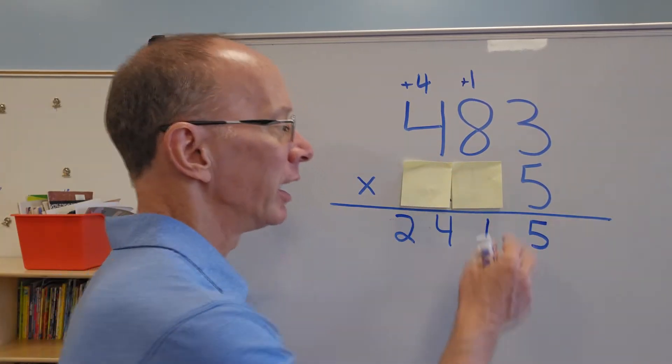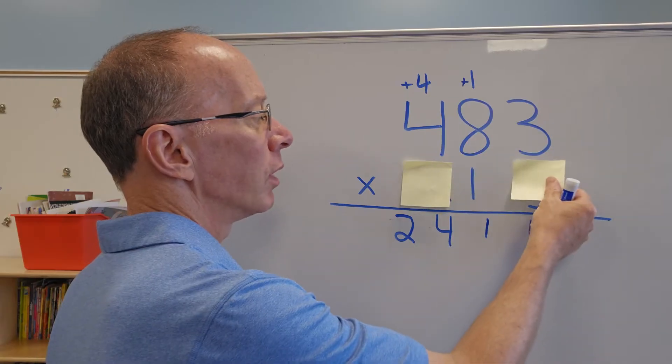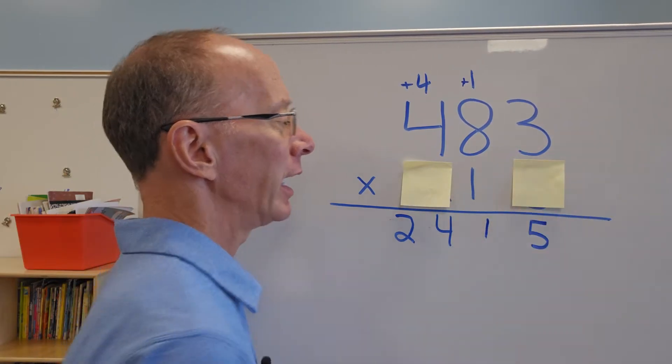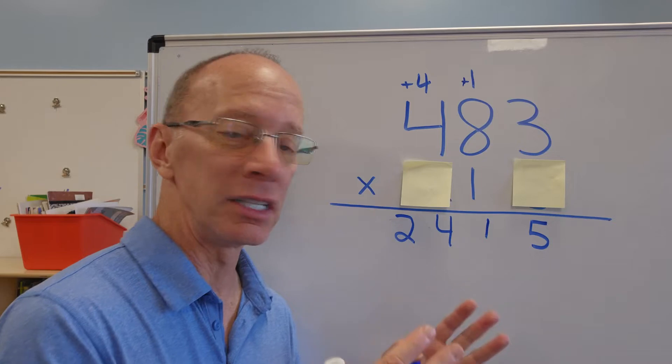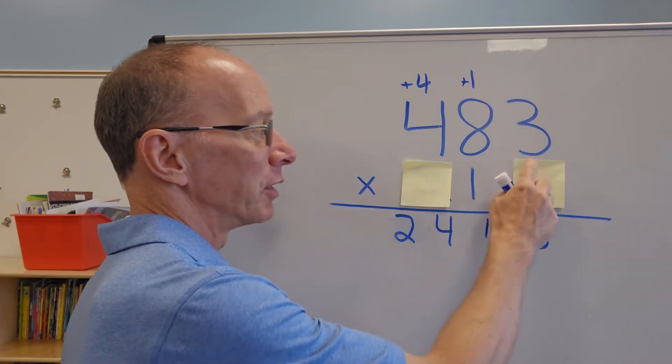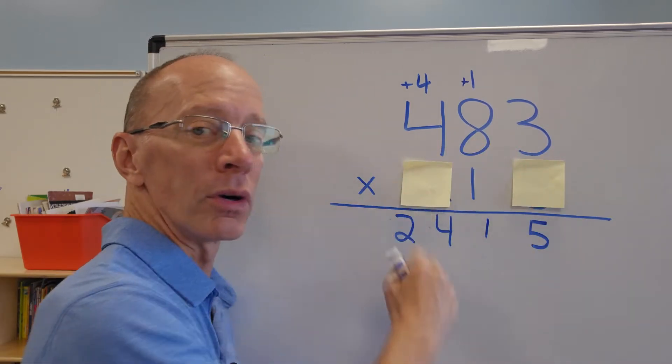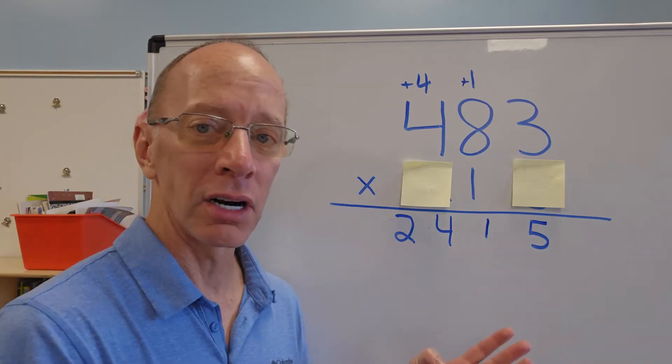Now I move on to the next number and that would be the one. All right. And as you can see, this is going to be really easy to multiply. It's going to be one times three is three. One times eight is eight. One times four is four. But where do I start?